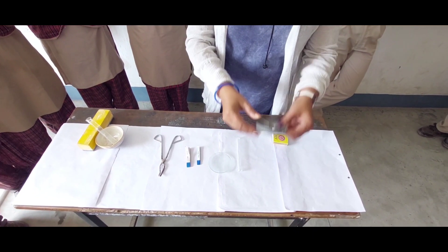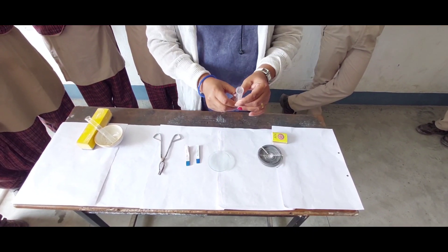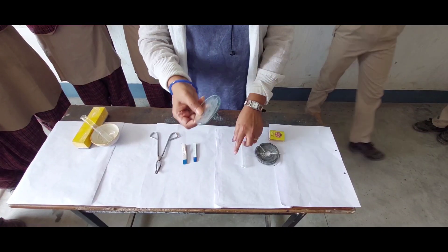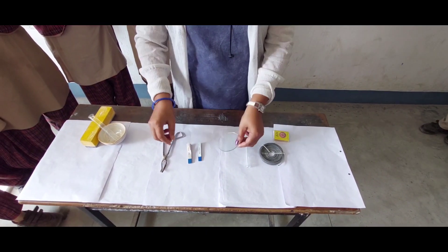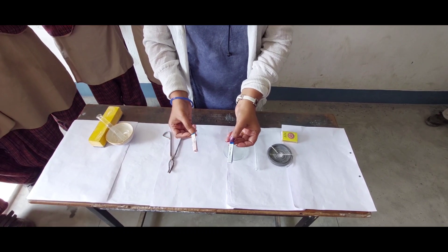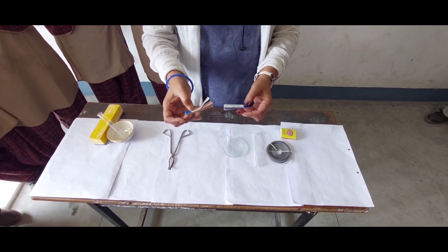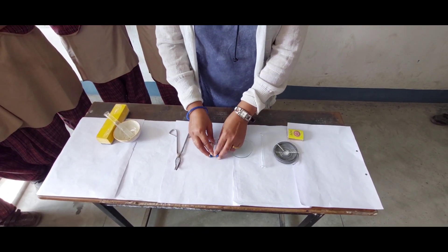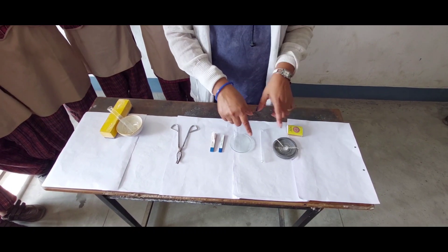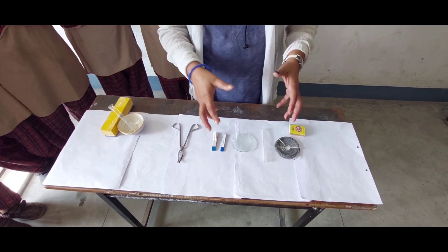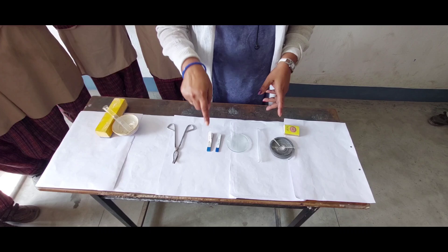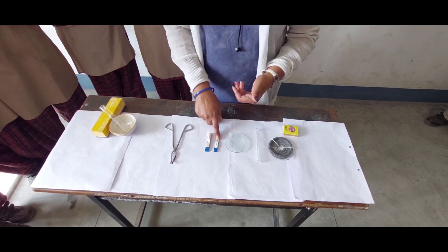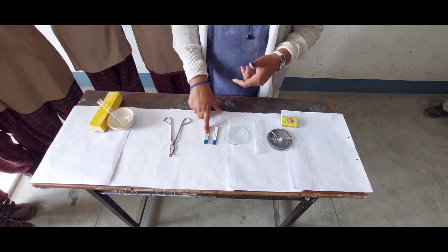Let me show you the materials. This is magnesium ribbon, this is a test tube, this is watch glass, and these are litmus papers - blue litmus paper and red litmus paper - to test whether the oxide is acidic or basic. You know that blue litmus will remain blue in basic solution while red litmus will turn blue in basic solution.